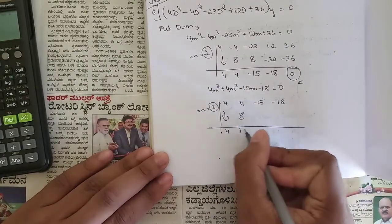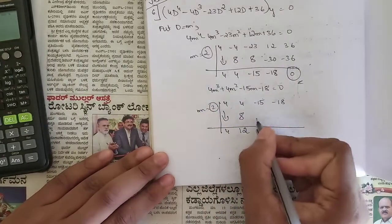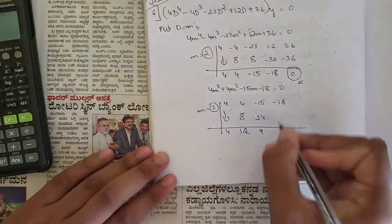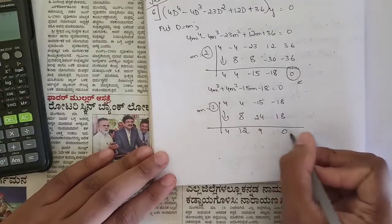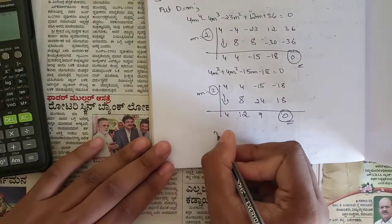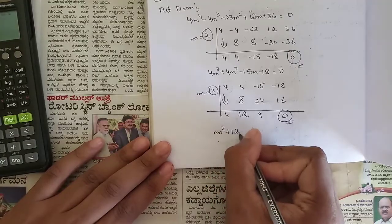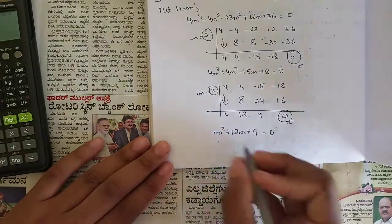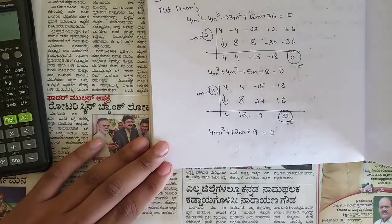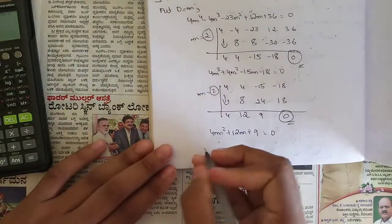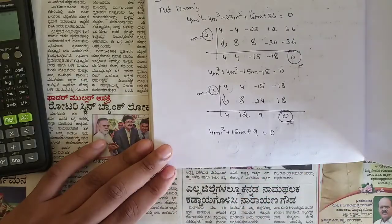Apply synthetic division again to 4m³ + 4m² − 15m − 18 = 0 with coefficients 4, 4, −15, −18. Testing x = 2 again gives zero. Bring 4 down; 2×4 = 8; 4+8 = 12; 2×12 = 24; −15+24 = 9; 2×9 = 18; −18+18 = 0. The resulting quadratic is 4m² + 12m + 9 = 0.